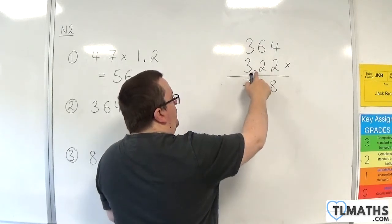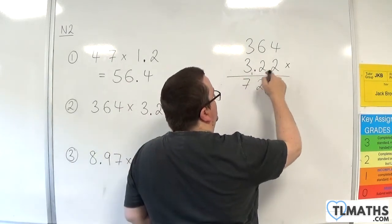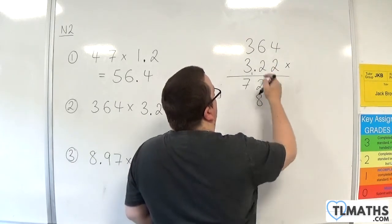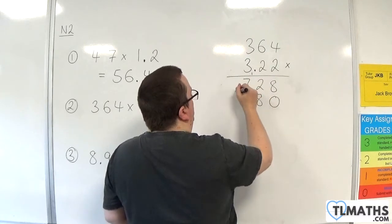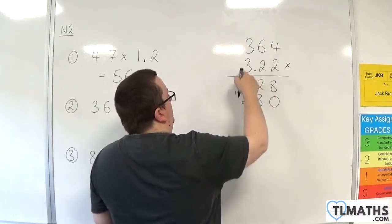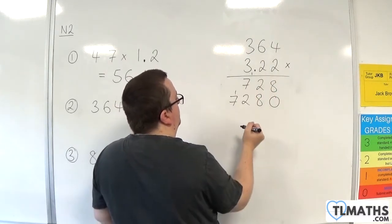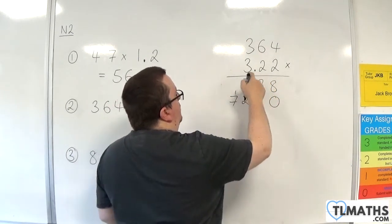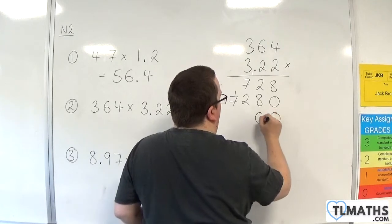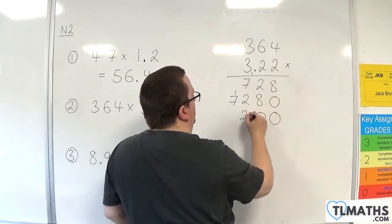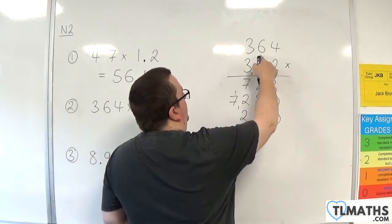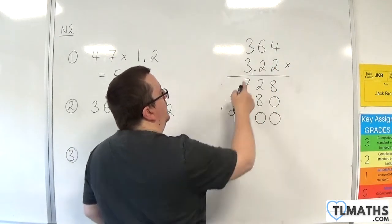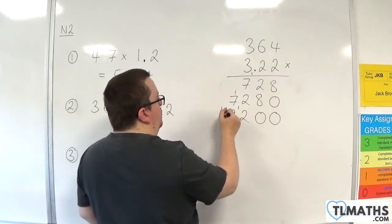Now ignore the decimal point. We're now going to be multiplying by 20, so we've got to add in a 0. 2 times 4 is 8. 2 times 6 is 12, put in the 2, carry the 1. 2 times 3 is 6, add in the 1 is 7. Still ignoring the decimal point, we're now multiplying by 300, so put in two 0s. 3 times 4 is 12, put in the 2, carry the 1. 3 times 6 is 18, add on the 1 is 19. Put down the 9, carry the 1. 3 times 3 is 9, add on the 1 is 10.